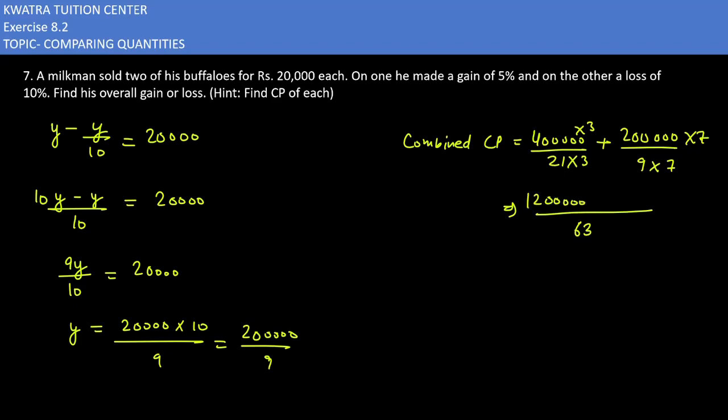Then adding 2 lakh times 7, that is 14 lakh. Now add 14 lakh, so it will be 26 lakh in total, dividing it by 63. This is our combined CP.